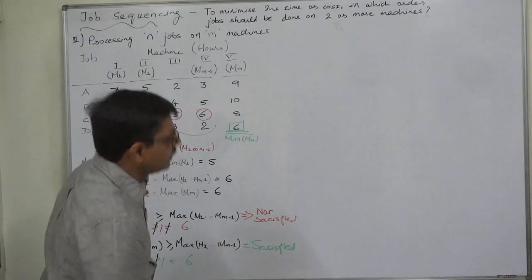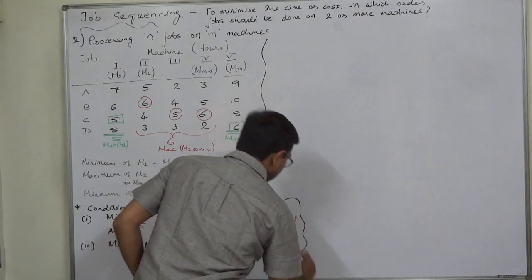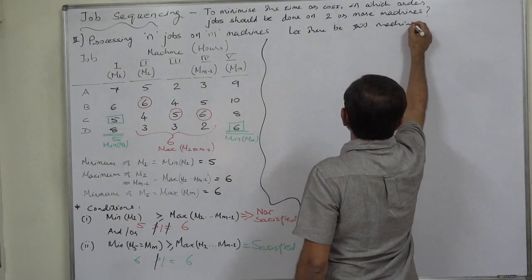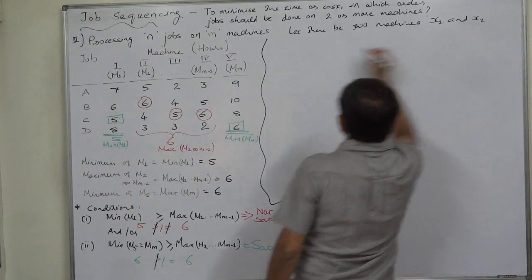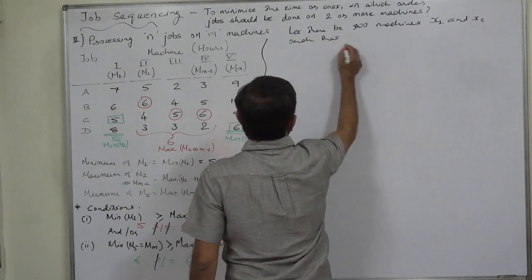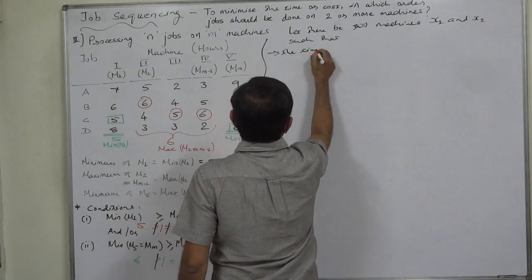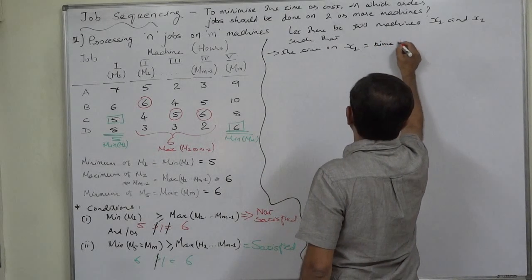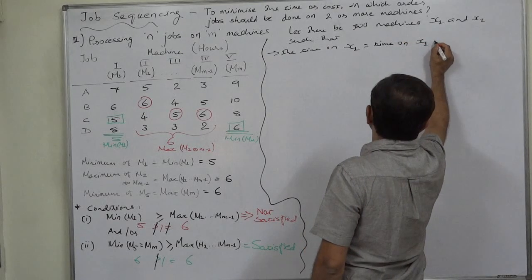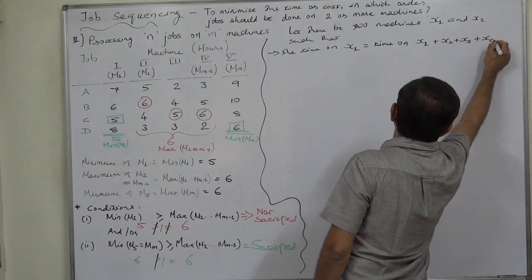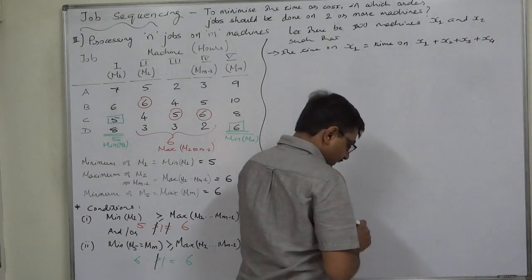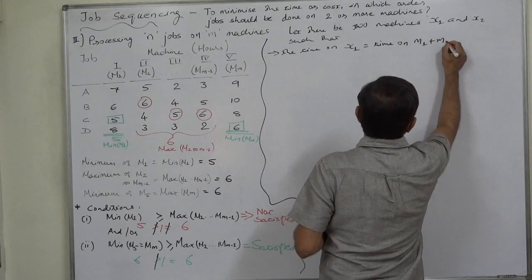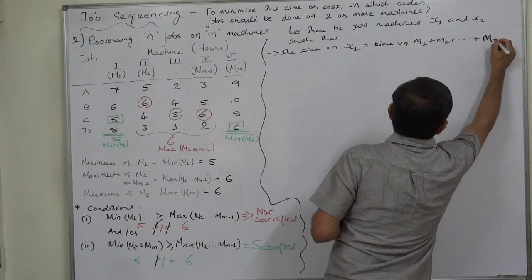Let us imagine only two machines: X1 and X2, such that the time on X1 equals the sum of times on M1 + M2 + ... + M(m-1), that is, all machines except the last.